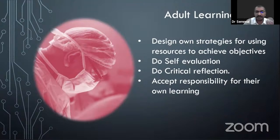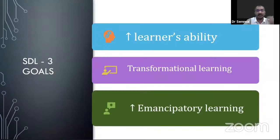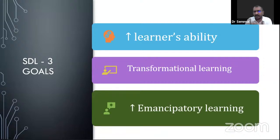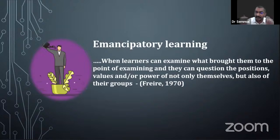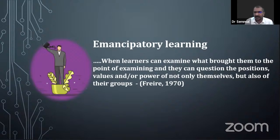There are four stages by which a learner progresses in SDL. First is the dependent learner — younger, needing a coach, needing informational lectures, overcoming deficiencies. Second is the interested learner — motivated, needing someone to inspire them. For example, I used to tell students about Guyton, the great cardiovascular physiologist who had ten children all of whom became doctors. When students hear that story, they get motivated and search his research articles.